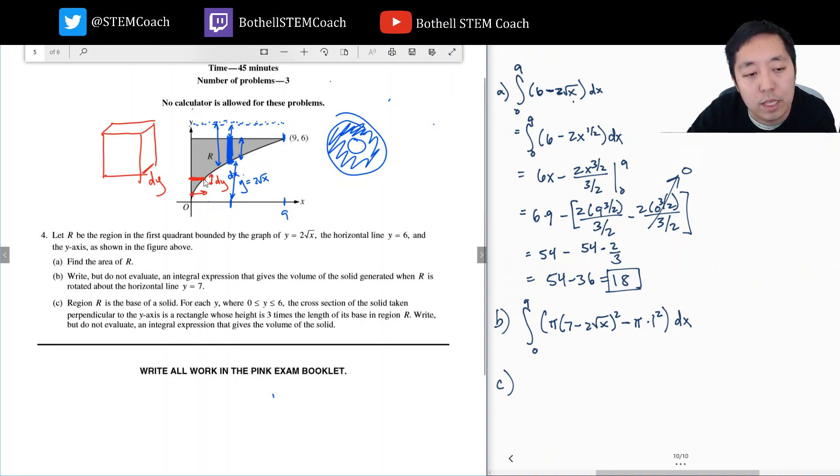Because I'm going to integrate over y, this length is just whatever the x coordinate is. But this curve is given by y equals 2 root x, so I can solve for x is equal to one half y squared. So the x coordinate is given by one fourth y squared. And then they say the height of this rectangle is three times this, so that would be three fourths y squared.